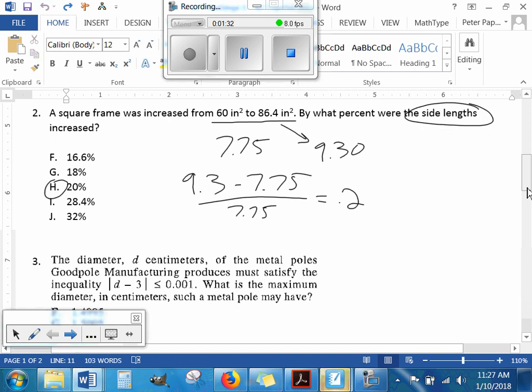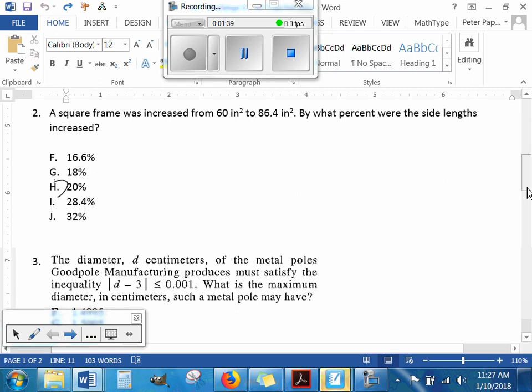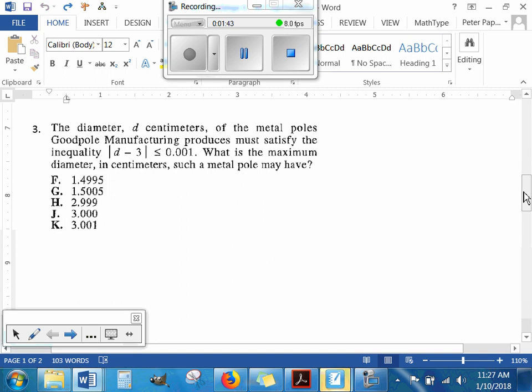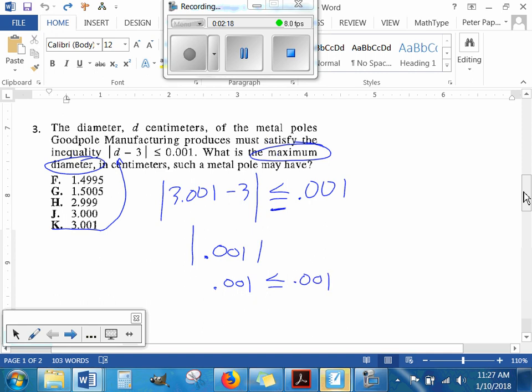Please select your answer for number three. We're trying to find the maximum diameter. I'm going to start with the maximum number in the answers and see the first one that works in this equation, because the largest number that's true has to be the answer. If we do the absolute value of 3.001 minus 3, is that less than or equal to 0.001? This would be the absolute value of 0.001, which is 0.001, and that equals 0.001. Since this has the option for equal, the answer is K.